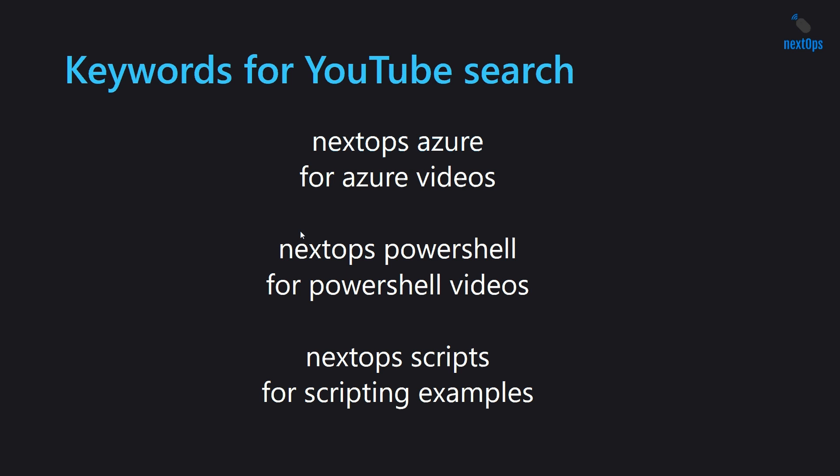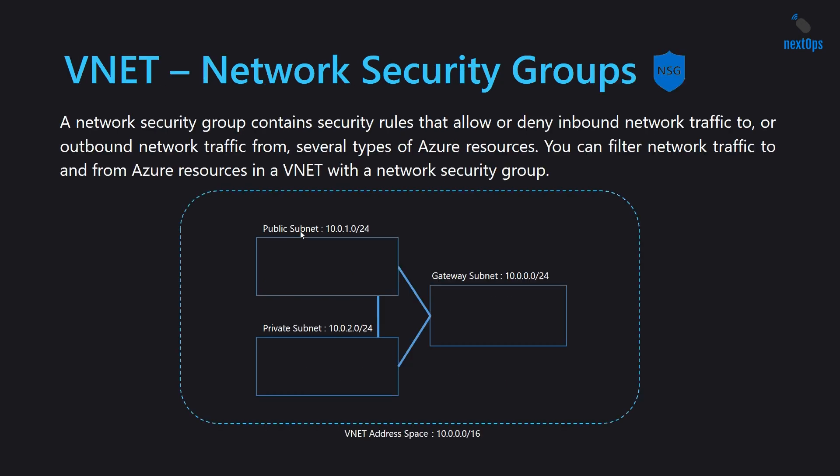We were discussing about subnets in the previous video. This is one of my favorite topics. What are network security groups? A network security group contains security rules that allow or deny inbound or outbound traffic to or from several types of Azure resources — a virtual machine, a web app, or a database. You can filter network traffic to and from Azure resources in a VNet with a network security group.